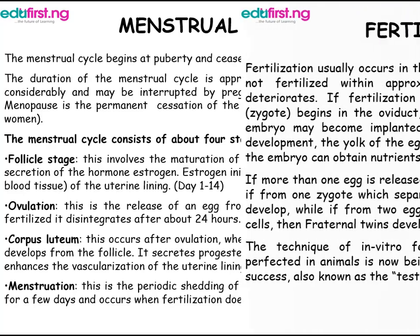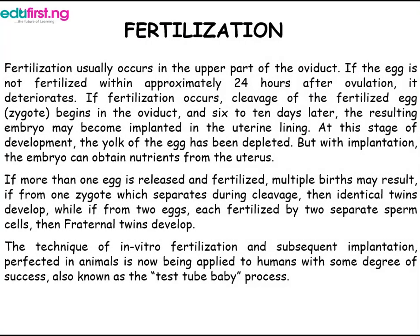Fertilization usually occurs in the upper part of the oviduct. If the egg is not fertilized within approximately 24 hours after ovulation, it deteriorates. If fertilization occurs, cleavage of the fertilized egg — the zygote — begins in the oviduct, and 6 to 10 days later, the resulting embryo may become implanted into the uterine lining.